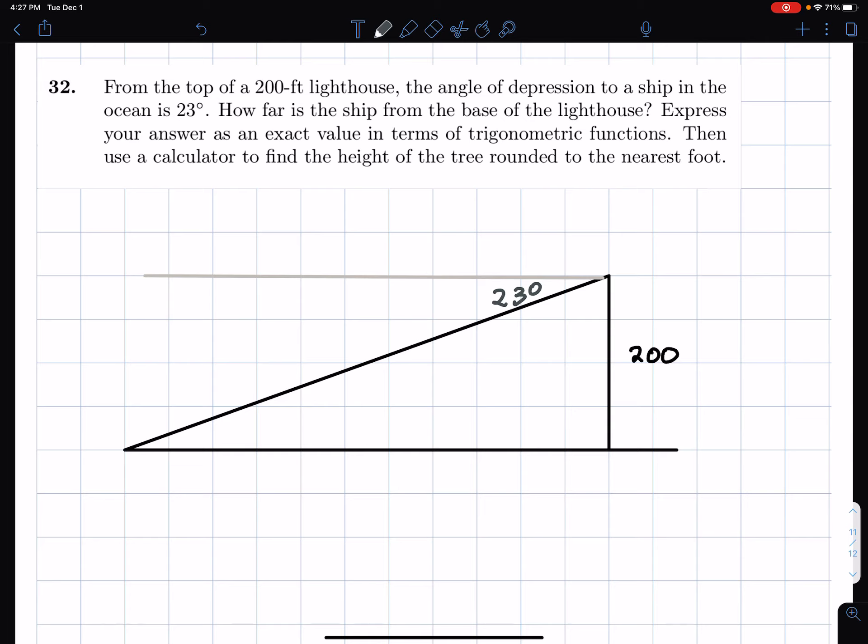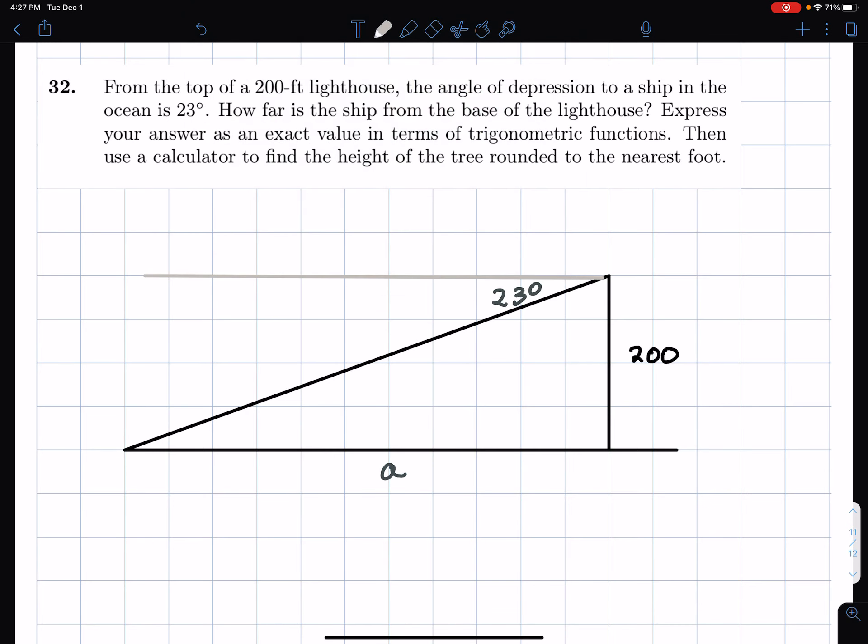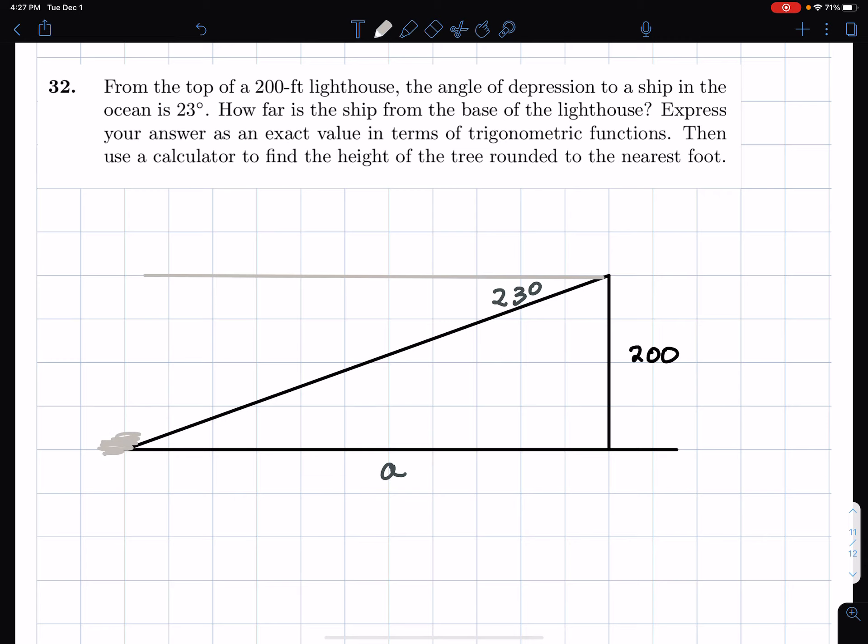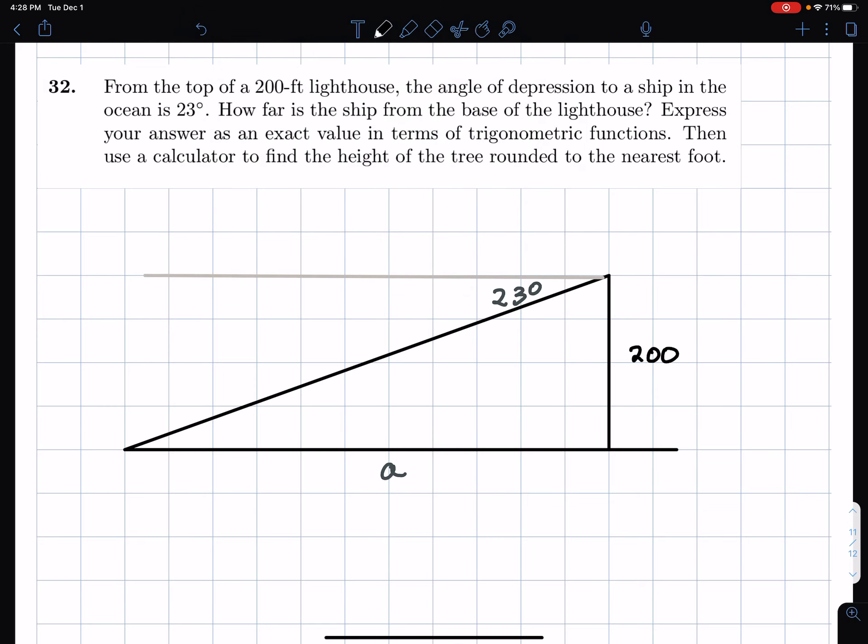And how far away is the ship from the base of the lighthouse? So this is, say, call this A. And let's also fill in maybe, well, the problem is I start getting carried away. But maybe I can make it clear that this is the ship over here. So that looks like a little sailboat or something. That's supposed to be my ship.